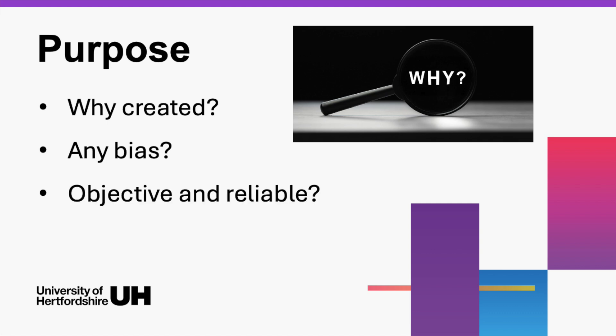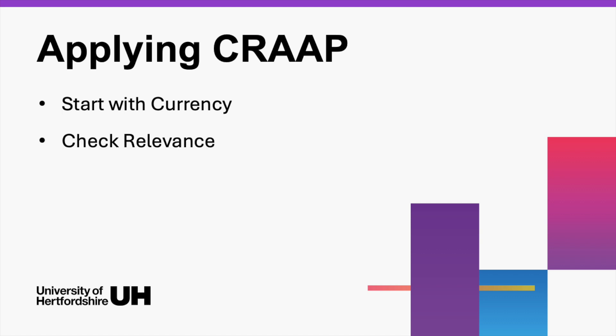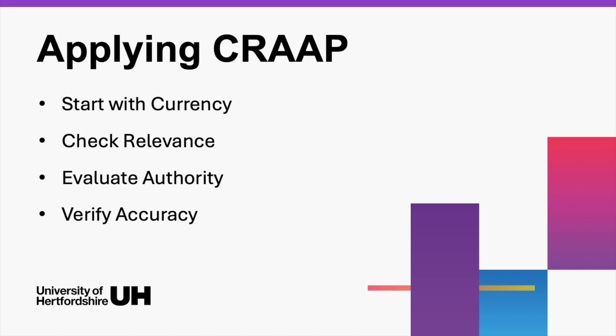Always start with currency to ensure the information is up-to-date. Next, check relevance to make sure it suits your research needs. Then, evaluate the authority to confirm the author's credibility. Verify accuracy by cross-referencing with other sources. Finally, consider the purpose to identify any potential biases.